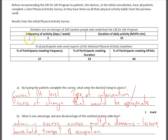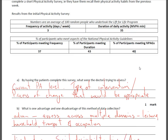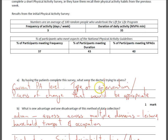Part A is looking at pre-intervention information. By having the patients complete this survey, what were the doctors trying to assess? They're looking at frequency of activity, duration of activity, percent meeting frequency, percent meeting duration, and percent meeting the National Physical Activity Guidelines. They're trying to assess the current physical activity level and work out what type of intervention or process of change would be most appropriate.